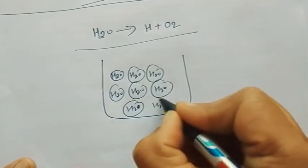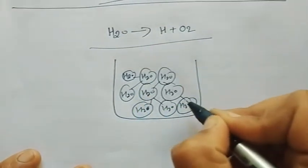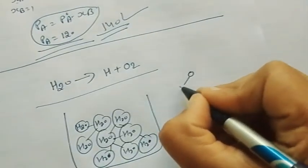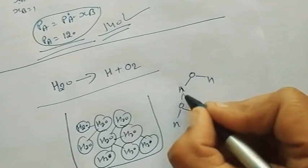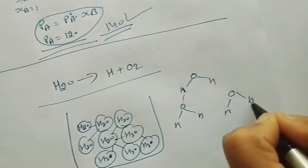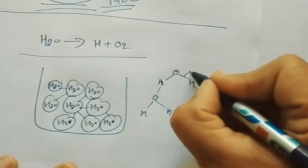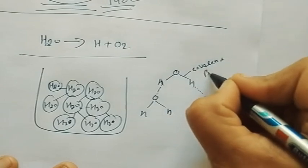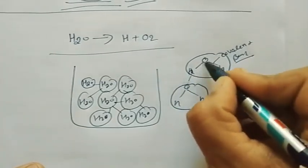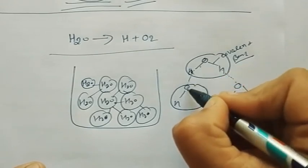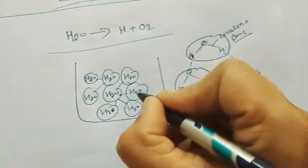Water molecules are held together by H-bonds — hydrogen bonds between the oxygen of one water molecule and the hydrogen of another. The bond within a single water molecule between O and H is a covalent bond. So the covalent bond stays intact; it is the H-bond between water molecules that breaks during boiling.